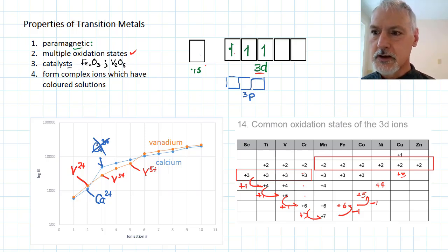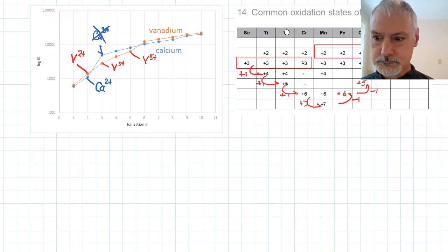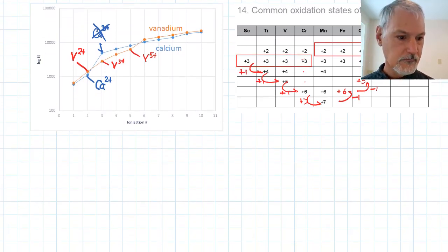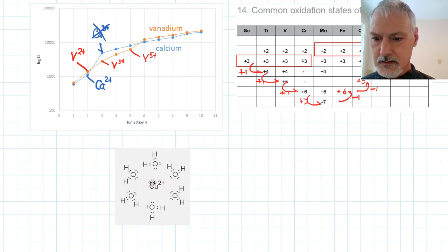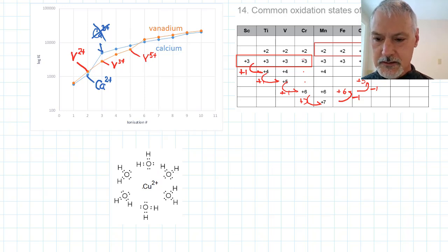We also tend to form what are called complex ions. Let's take a look at what those look like. Here's an example of a complex ion. We have a copper ion in the center surrounded by, in this case, a group of water molecules. And these lone pairs of electrons are shared essentially with that copper with a positive charge. The electrostatic attraction that exists between these negatively charged pairs and the positive copper ion creates what we call a coordinate bond, where one atom is doing all of the donating.